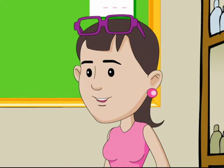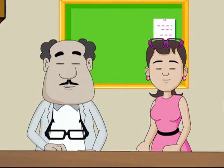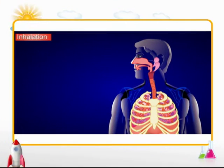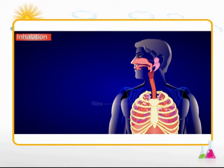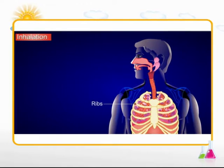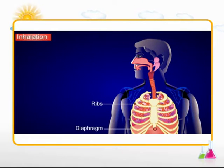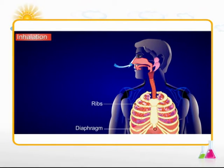Let's see how exactly our lungs expand and contract while we inhale and exhale. During inhalation, the muscles between the ribs contract, causing the ribs to move upwards and outwards, increasing the volume of the chest. The muscles of the diaphragm also contract and pull the diaphragm down, causing the lungs to expand, and air is drawn into the expanded lungs.